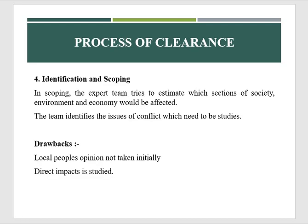Next is identification and scoping. In scoping, the expert team tries to estimate which sections of society, environment, and economy would be affected. The team discusses with people from respective fields, and based on scoping and results of the preliminary study, identifies the issues of conflict which need to be studied further. A drawback is that local people's opinions are not taken at this initial level, and experts study only direct impacts without going deeper.